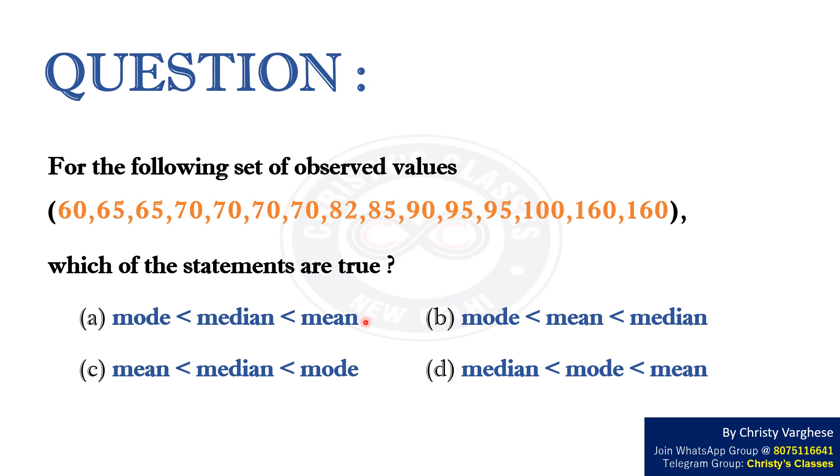Option A: Mode is less than median, which is less than mean. B: Mode is less than mean, which is less than median. C: Mean is less than median, which is less than mode. D: Median is less than mode, which is less than mean.